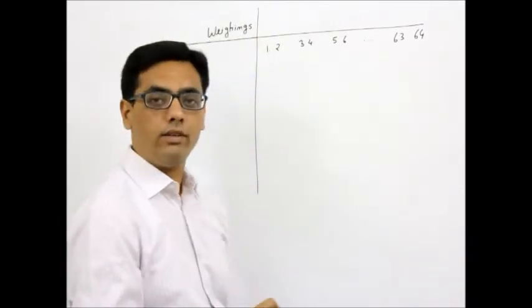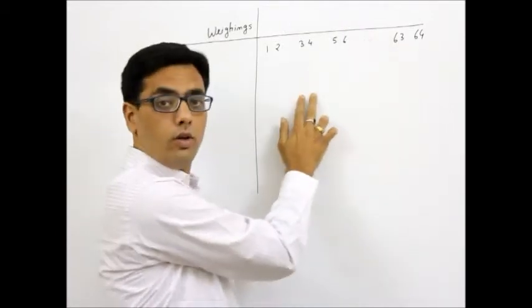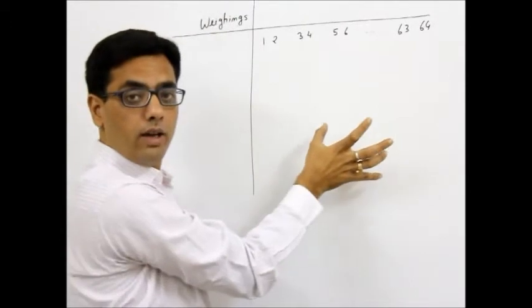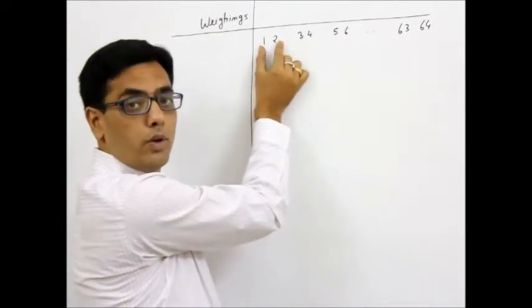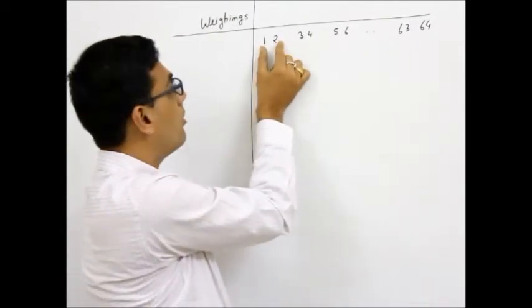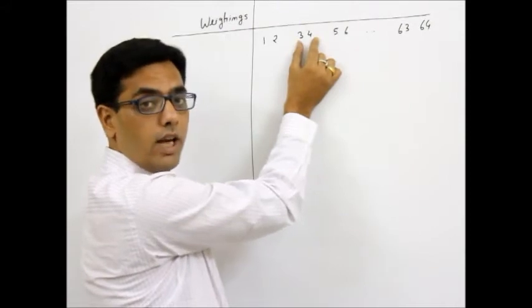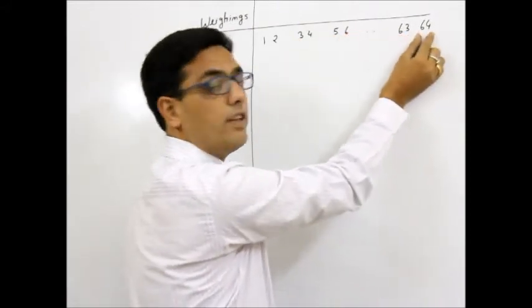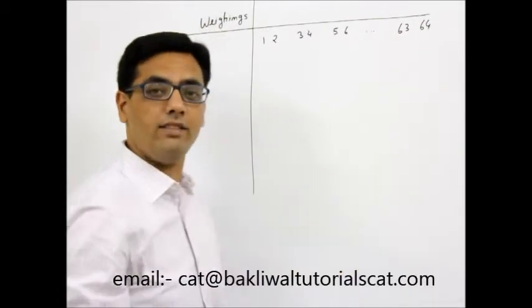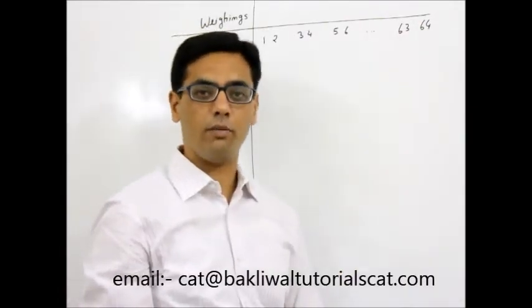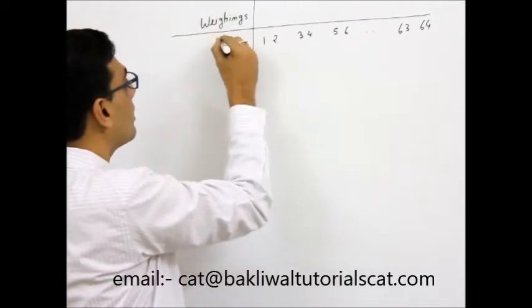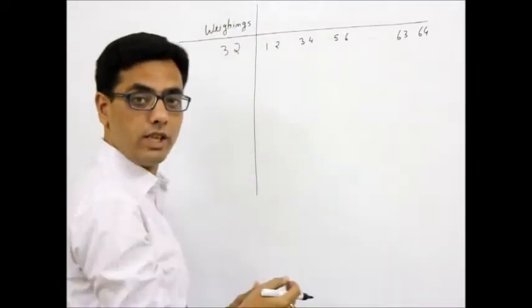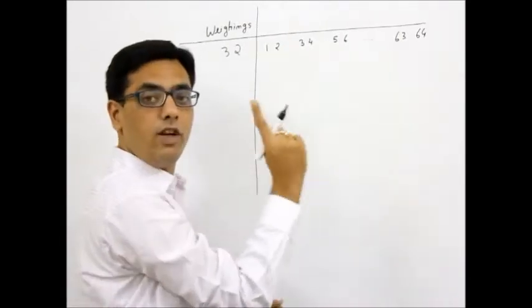First what we will do is we will make groups. These are marble numbers 1, 2, 3, 4 to 64. In our first grouping, we will weigh 1 versus 2. That is my first weighing. 3 versus 4, second weighing, 5, 6 and so on, 63 with 64. How many weighings have I taken in my first process? Obviously I have taken 32 weighings because these are 32 groups of 2 each. And in every 2 there is exactly 1 weighing. 1 versus 2.